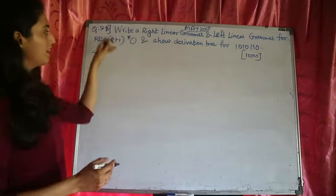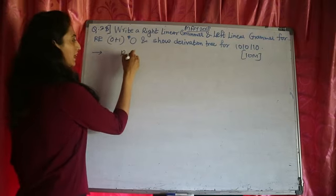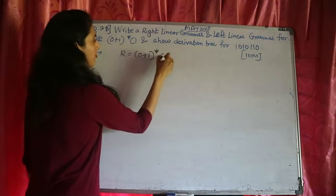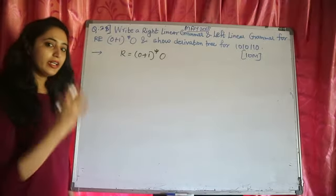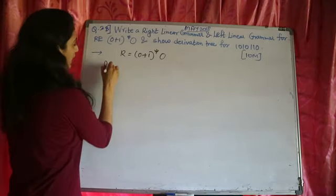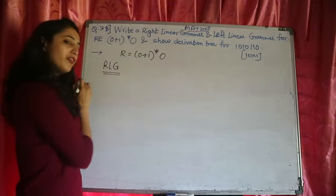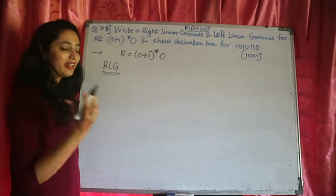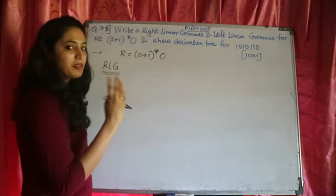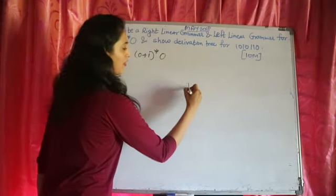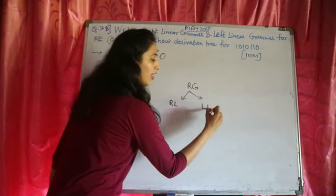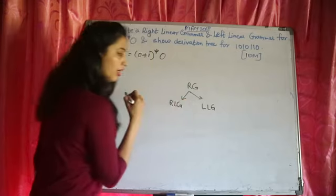We have been given a regular expression. Let me write it down: (0 + 1) closure, followed by 0. We need to construct the right linear grammar. Do we all know how to write right linear grammar? It is a type of regular grammar. Regular grammar is divided into two types: right linear and left linear grammar.